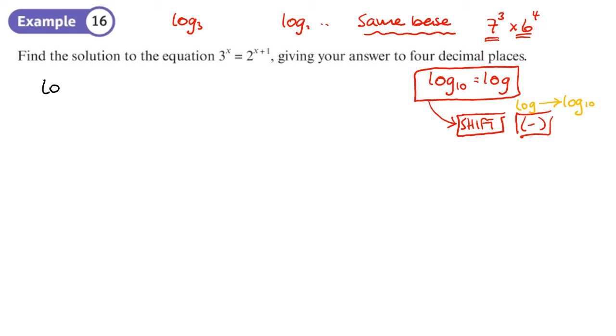So let's write this down. We'll write log, and this is log to the base 10, 3 to the power x equals log, this is log to the base 10, 2 to the power x plus 1. So log written on its own is log to the base 10. First thing I'm going to do here I'm going to put the power at the front. So I'll have x log 3 equals x plus 1, there's the power, log 2.